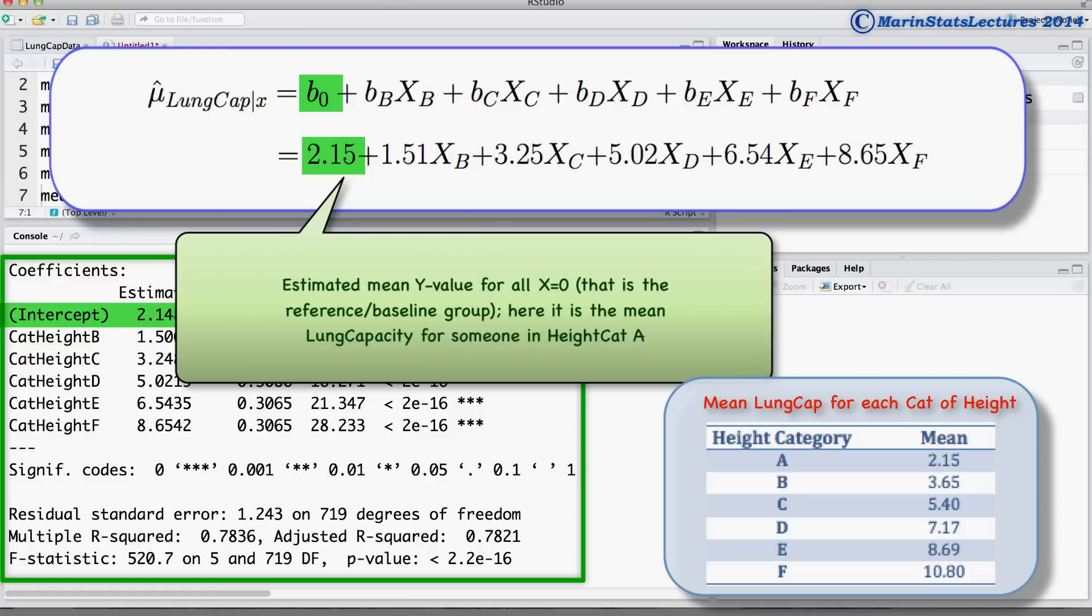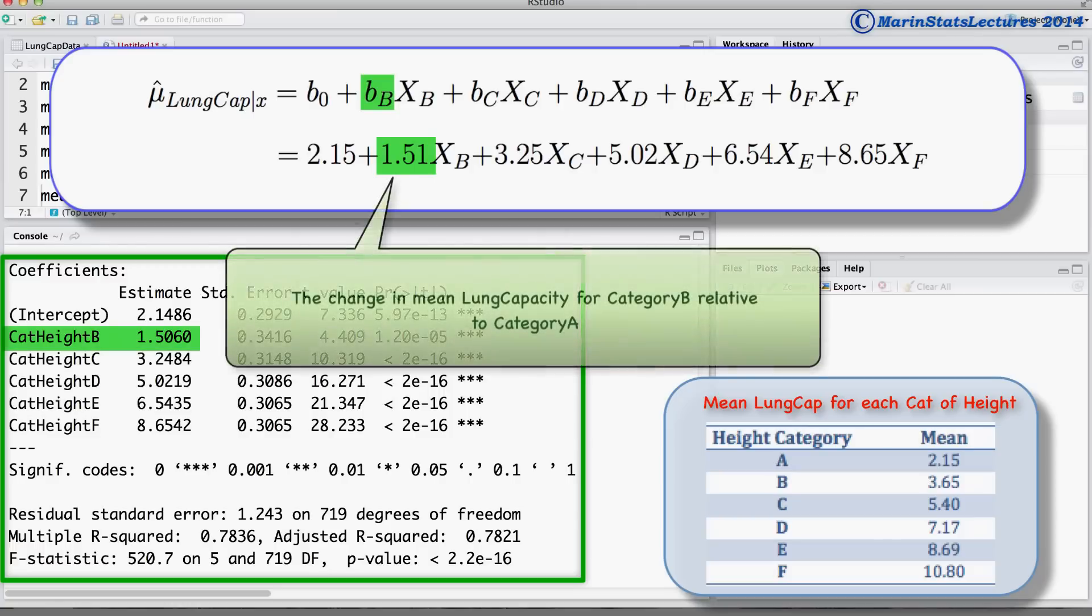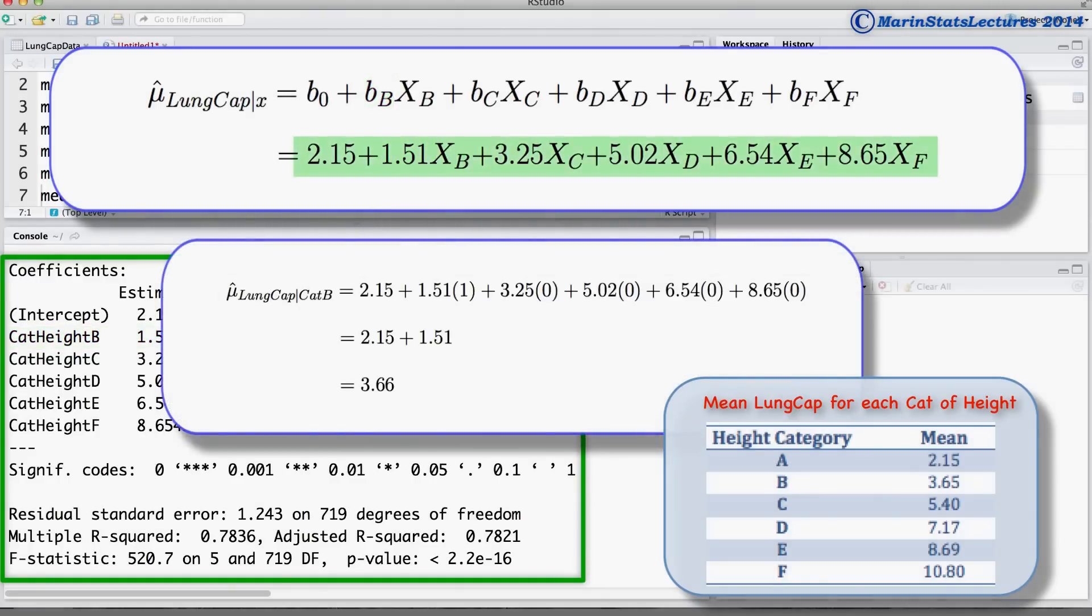In this particular model, it is the mean lung capacity for someone in height category A. The coefficient for category B of 1.51 is the change in mean lung capacity we would expect for someone in category B relative to category A.